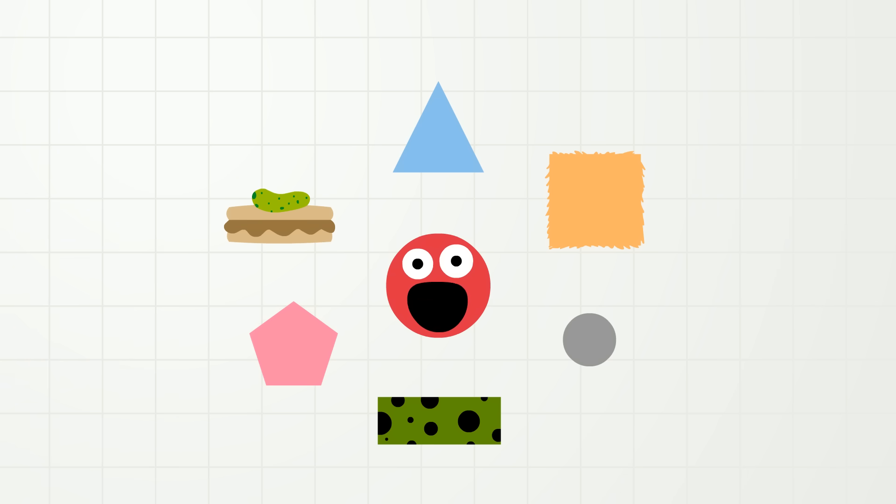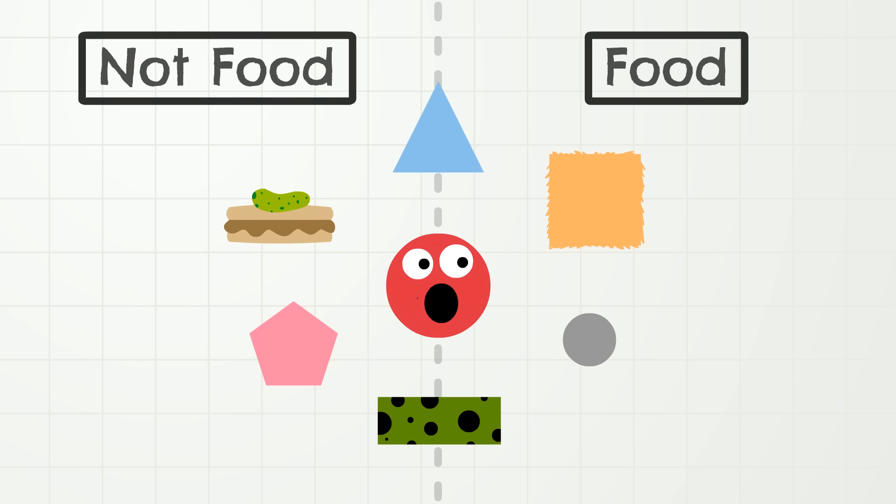And did you know that shapes can be sorted? Oh, yes they can! When you sort things, you put them into different groups. For example, I want to sort all the shapes that are around me into two groups. I want all the shapes that are food to go to the right side over here, and all the shapes that are not food to go to the left side over here.